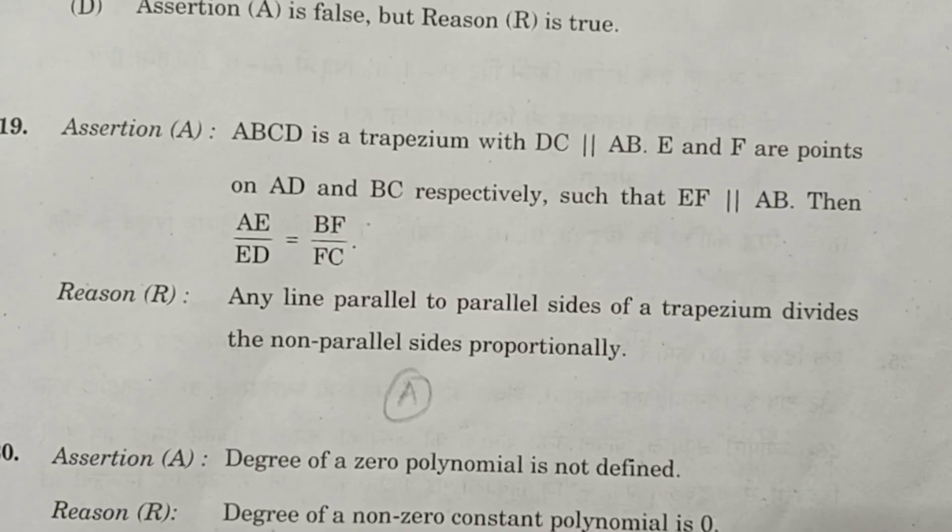Questions 19 and 20 are assertion and reason based questions. Question number 19. Assertion: ABCD is a trapezium with DC parallel to AB. E and F are points on AD and BC respectively, such that EF is parallel to AB, then AE by ED equals BF by FC. It is true. Reason: Any line parallel to parallel sides of a trapezium divides non-parallel sides proportionally. That is also true. Therefore, the correct answer is both assertion A and reason R are true, and reason R is a correct explanation to the assertion A.